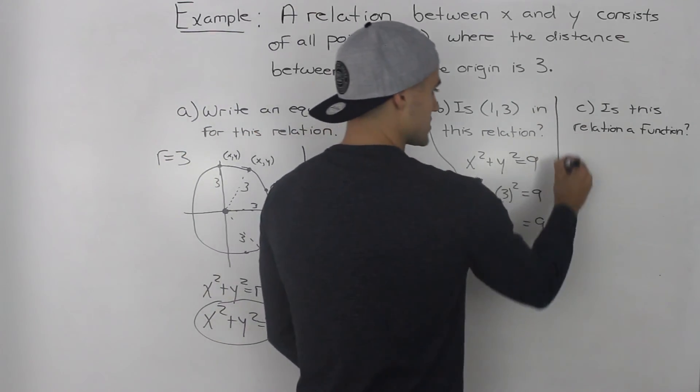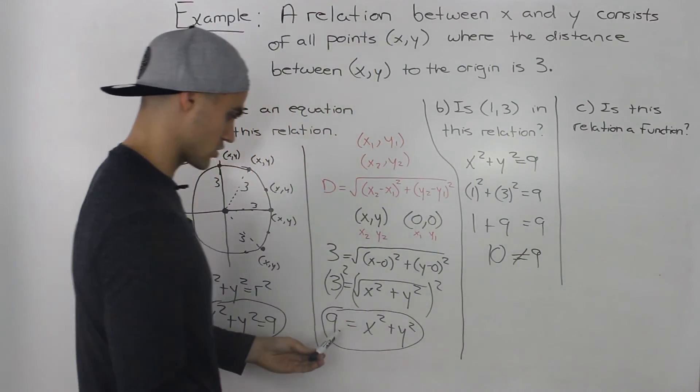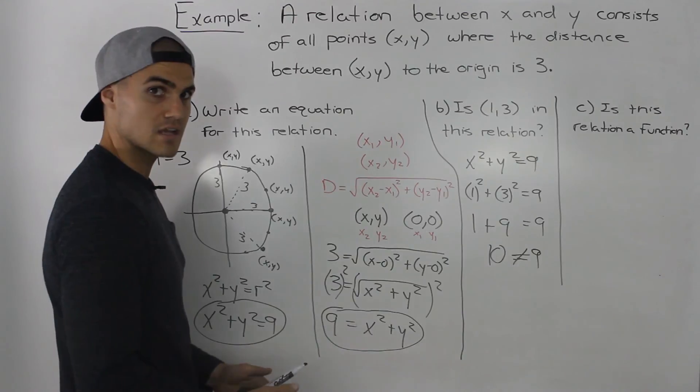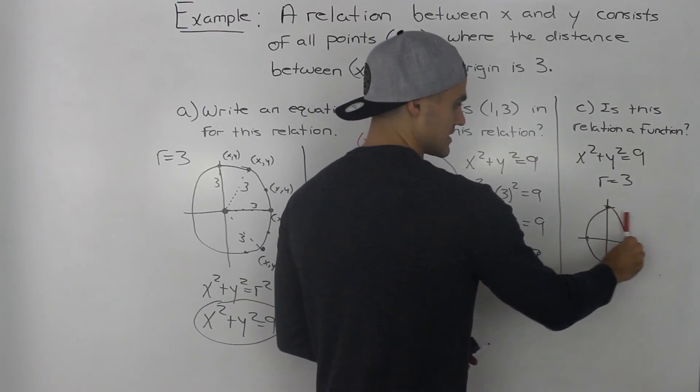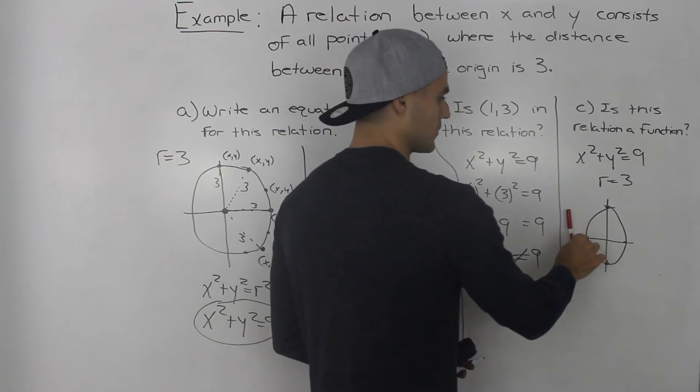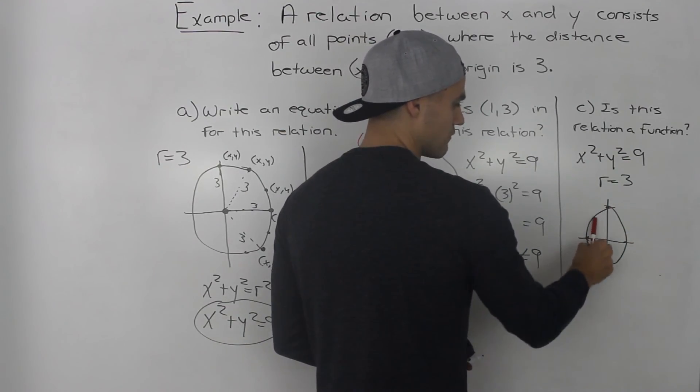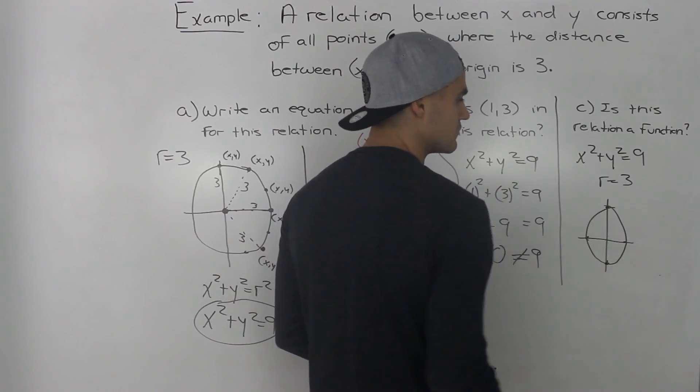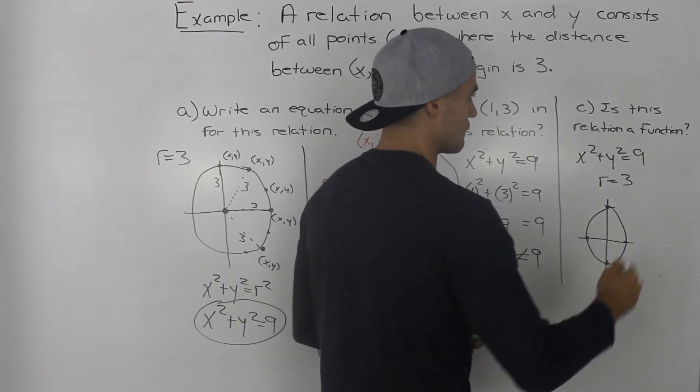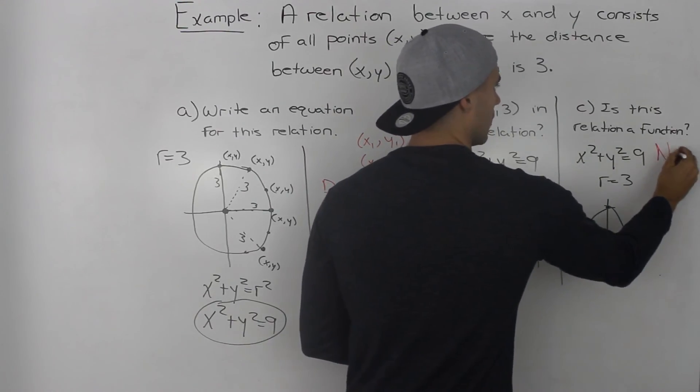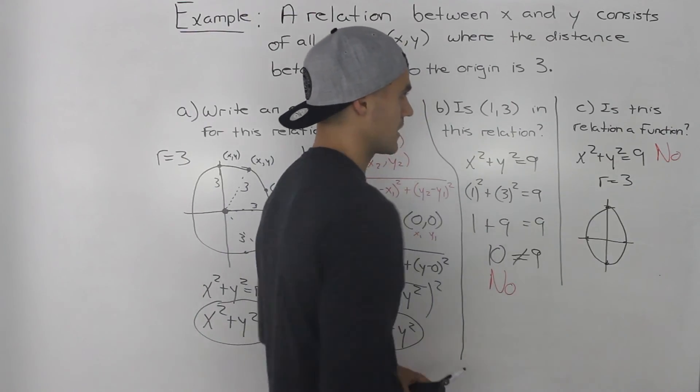And then part c, is this relation a function? Well, pretty simple. It's a circle with a radius of 3. We just have to realize that a circle is never a function. It's always going to fail the vertical line test. There are multiple y values for a bunch of x values. So is this relation a function? No. And the answer to this question was also no.